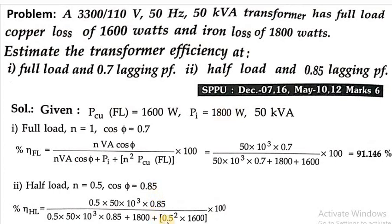Plus n² × P_cu at full load. What is n²? n is 0.5, so 0.5² into P_cu full load is 1600 watts, times 100. So the value is coming 90.618%.